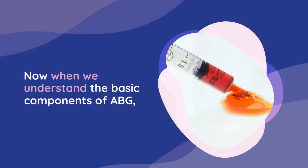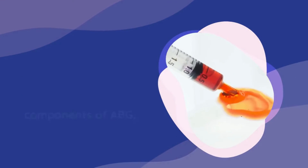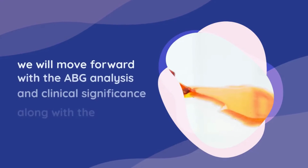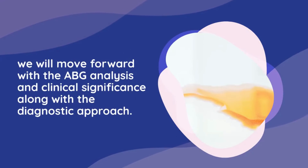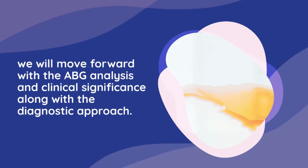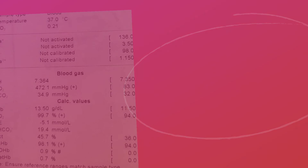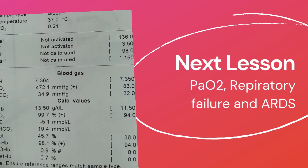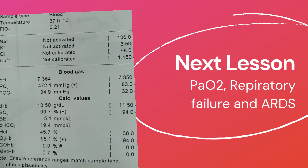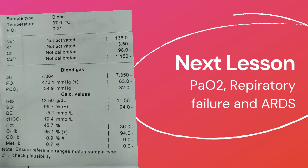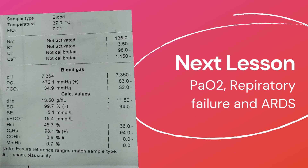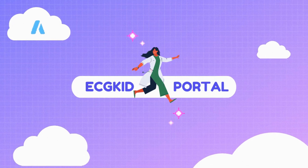Now that we understand the basic components of ABG, we will move forward with ABG analysis and clinical significance along with the diagnostic approach. In the next topic, we will discuss the partial pressure of oxygen in blood, PaO2, and respiratory failure, along with the diagnostic approach to ARDS. Thanks for watching and stay tuned.